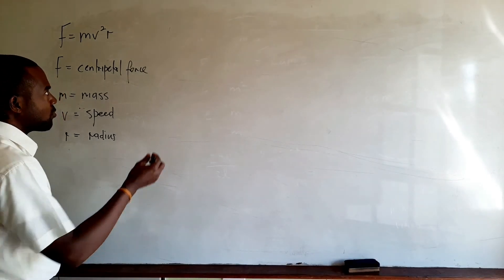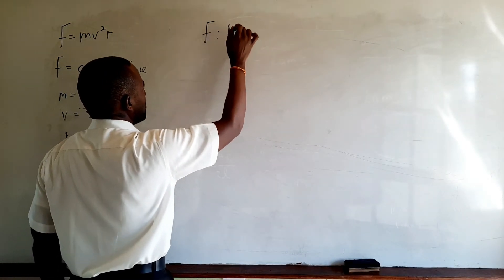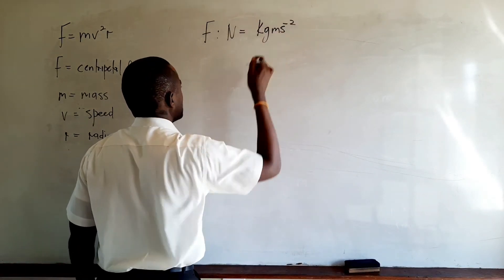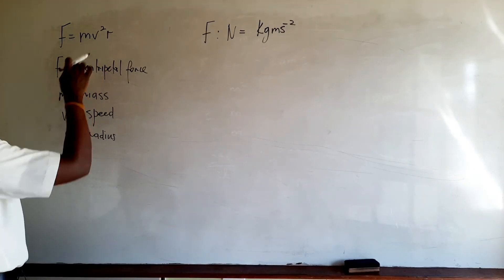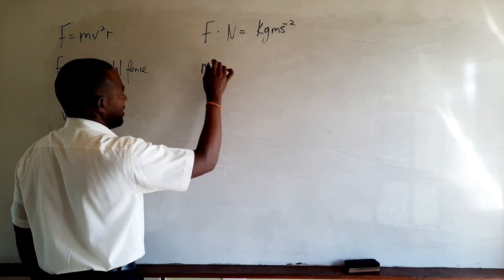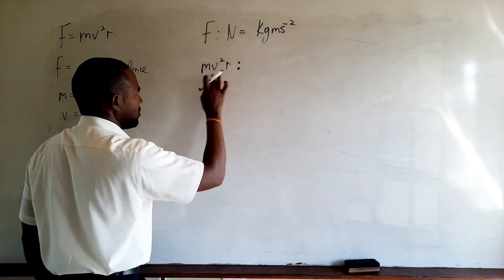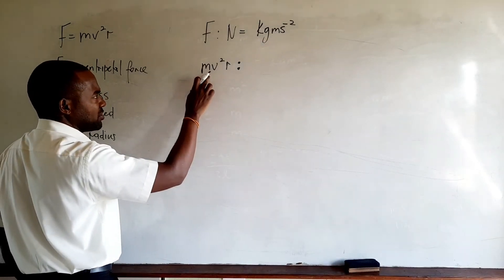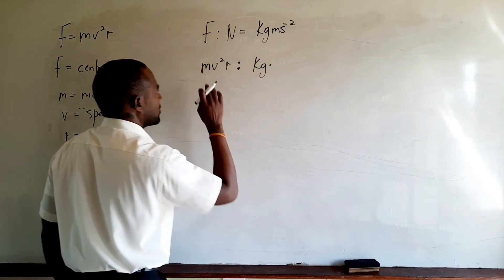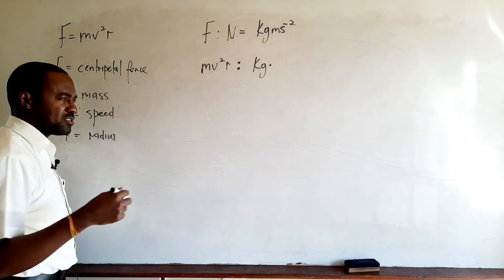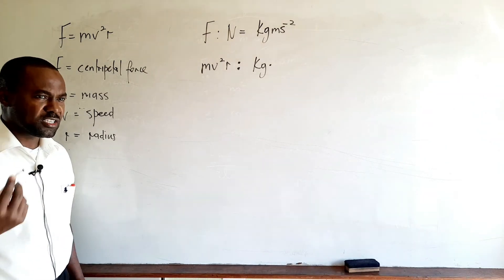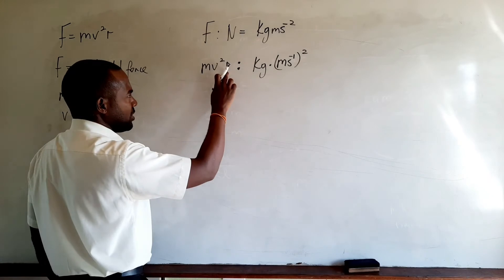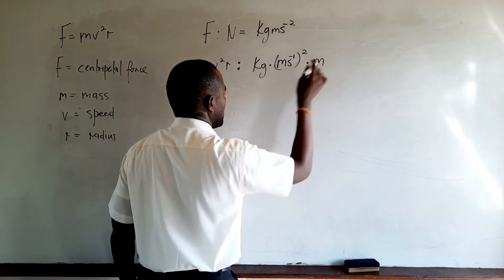The base unit of force is the Newton, which in terms of base units is equivalent to kilogram meter per second squared. For MV squared R, we write down the base units individually. M represents mass with base unit kilogram. V represents speed with unit meter per second, and because it is squared we square the base units: meter per second, all squared. R has base unit meter.